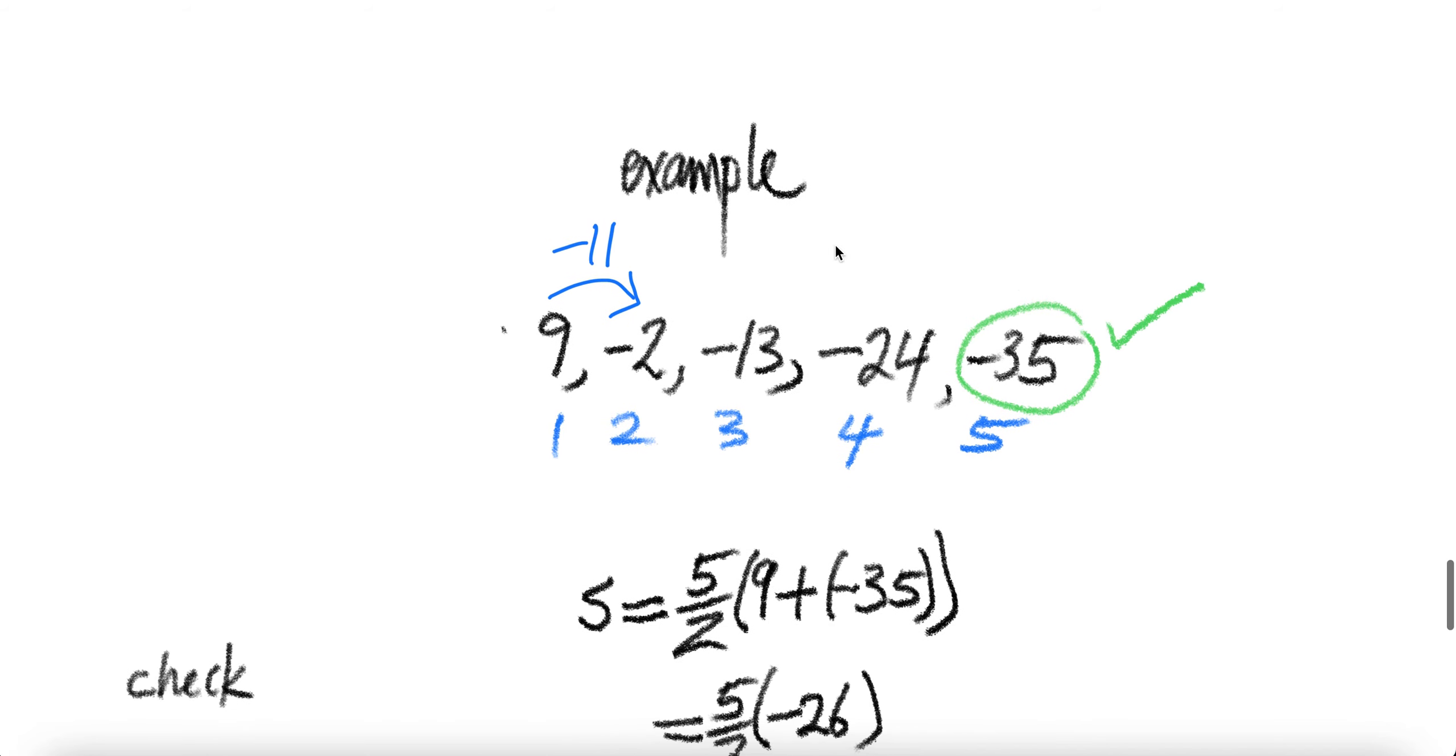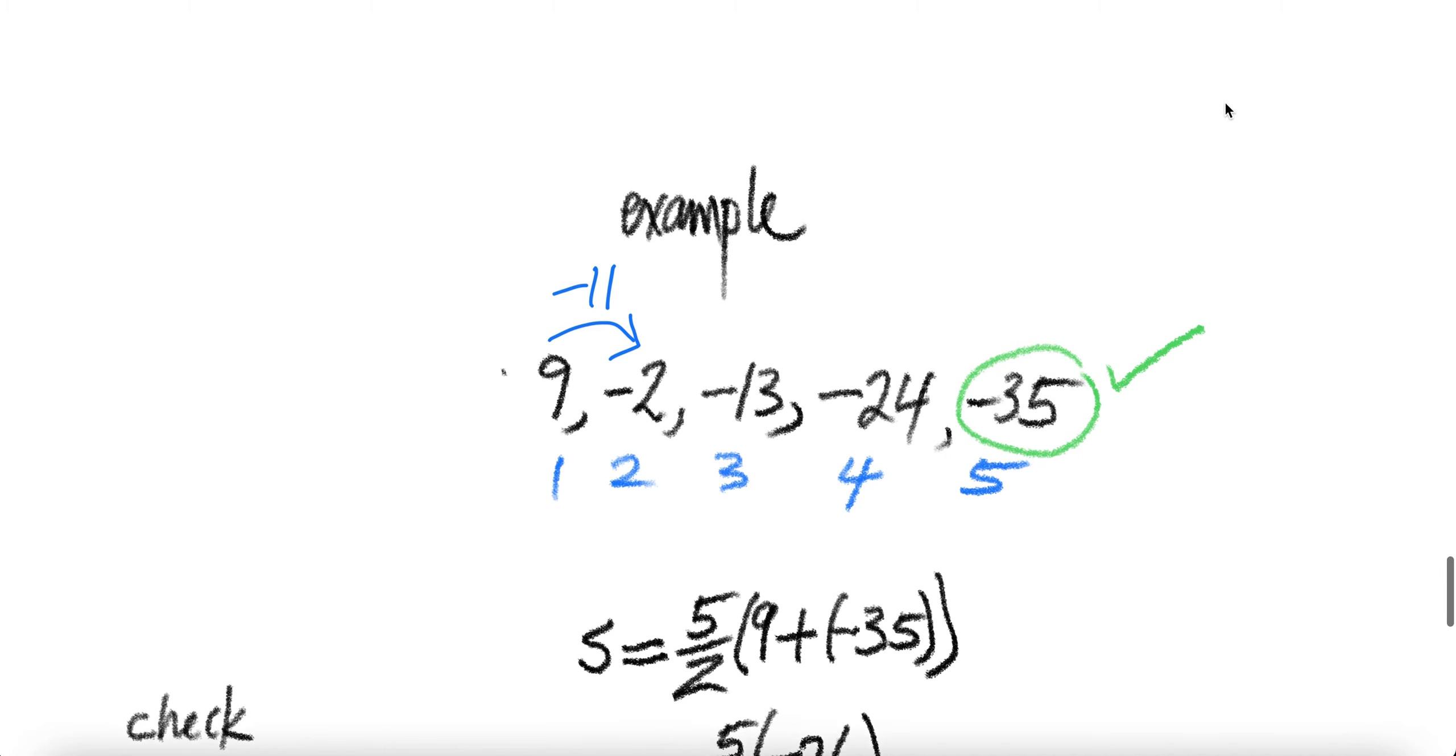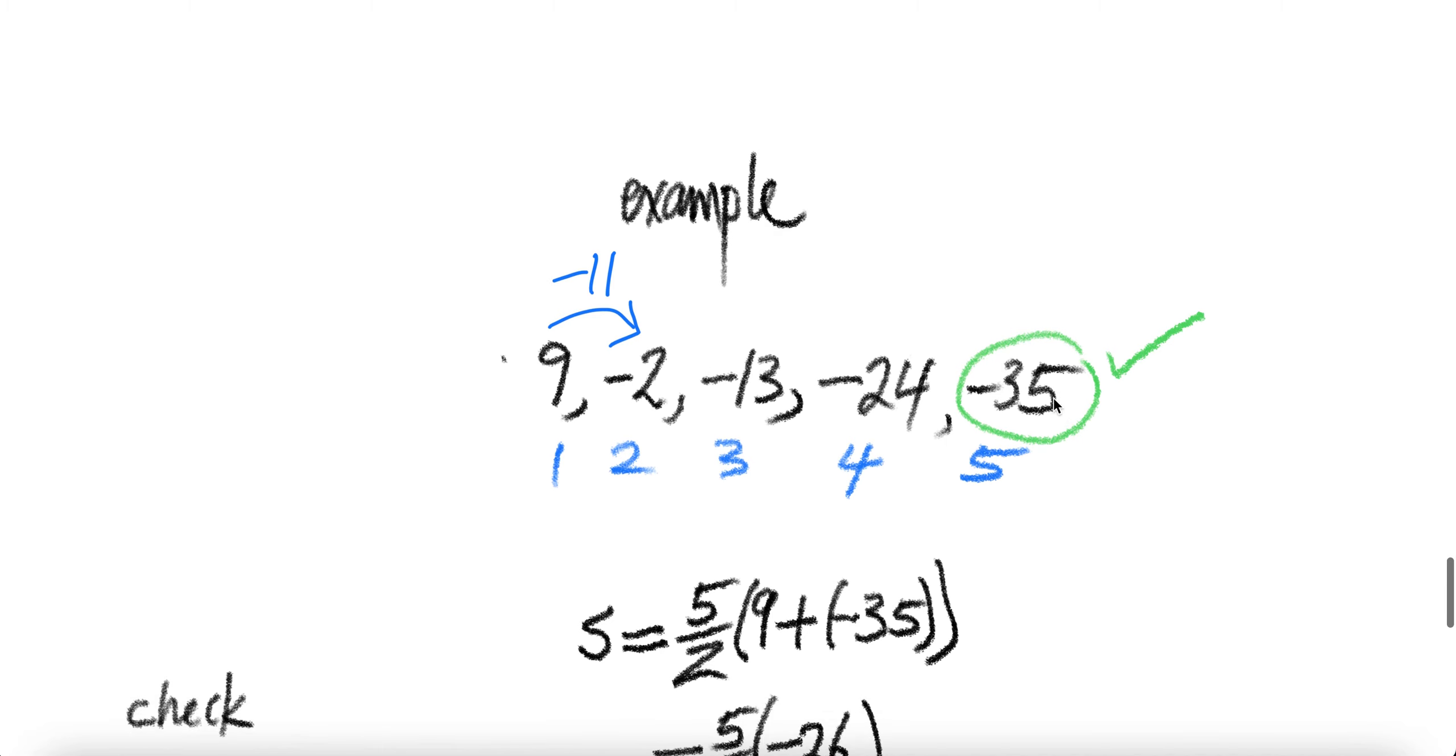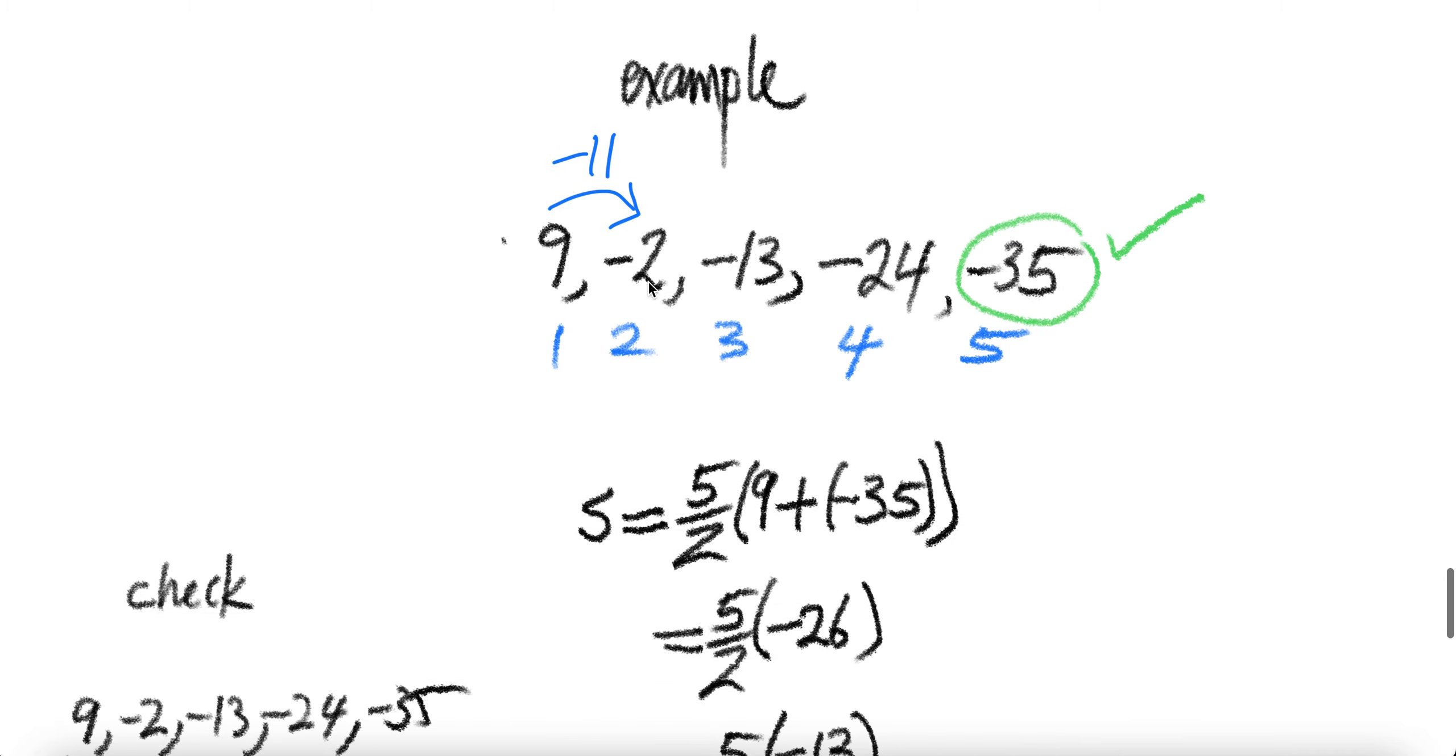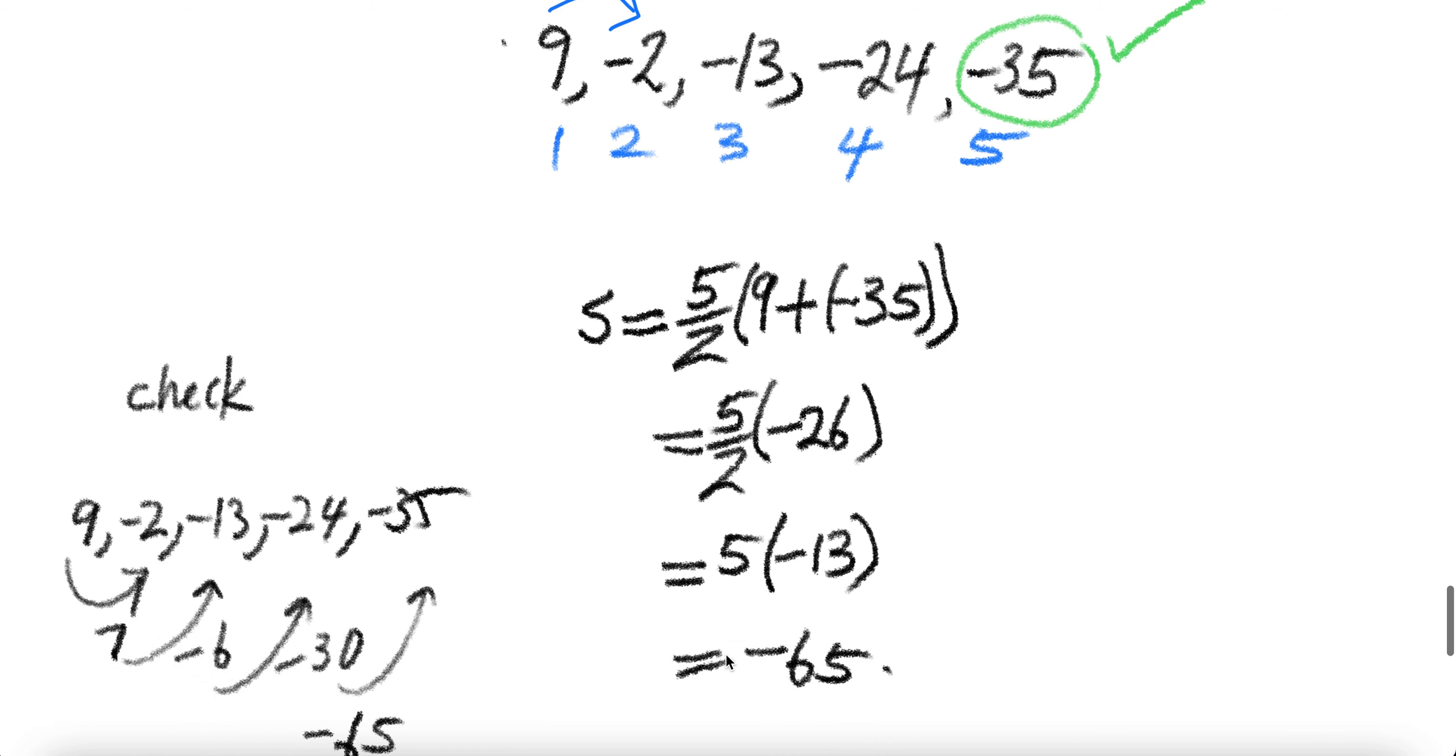Another example here, instead of going 118 terms, we give you a smaller example. Now this is given. If this is given, you need to find the sum. It's what? First term plus the value of the last term. And the number of terms is 5 divided by 2. And then you know how to do that. You get the sum is negative 65.